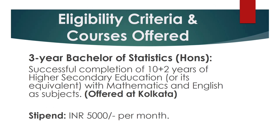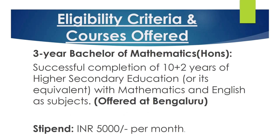Eligibility criteria: For the three-year Bachelor of Statistics and Bachelor of Mathematics, candidates must have successfully completed 10+2 higher secondary education or its equivalent with Mathematics and English as subjects. Stipend is 5000 per month.